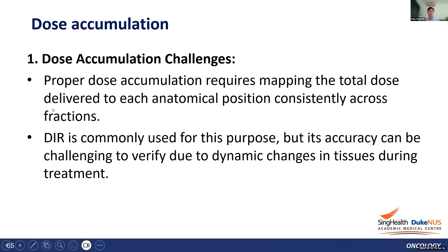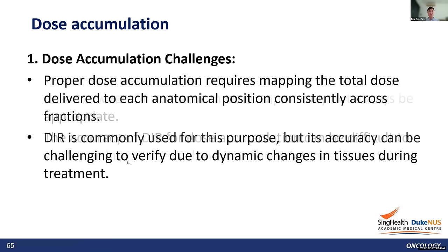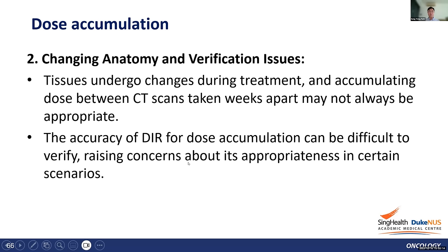Regarding dose accumulation: proper dose accumulation requires mapping the total dose delivered at each anatomical position consistently across fractions. Deformable image registration is commonly used for this purpose, but accuracy can be challenging to verify due to dynamic changes in tissues during treatment. Tissues undergo changes during treatment, and CT scans taken a week apart may not always be appropriate for dose accumulation. The accuracy of deformable image registration is difficult to verify in certain scenarios, making validation of the DIR algorithm really important.